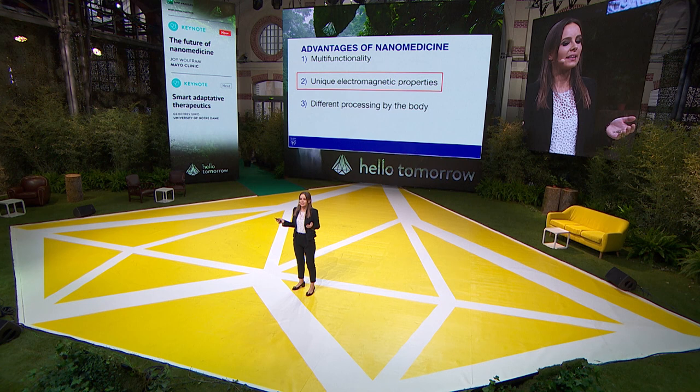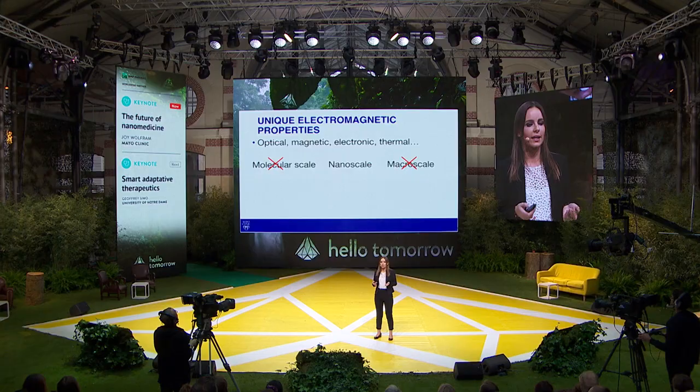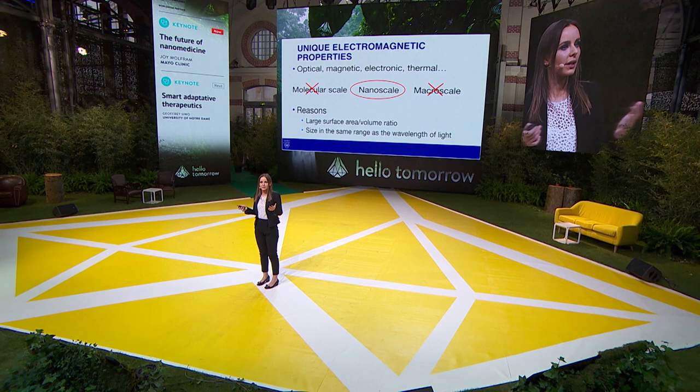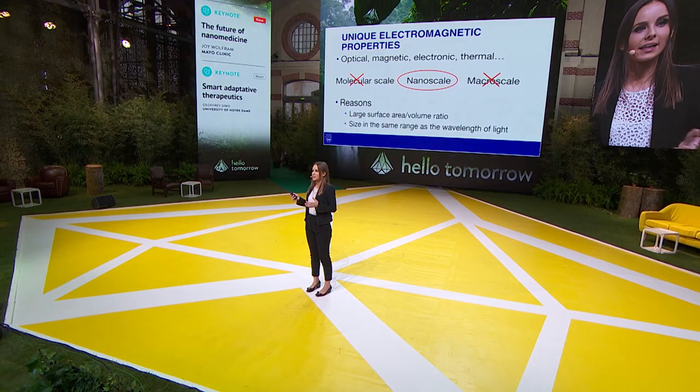The second advantage of nanomedicine involves unique electromagnetic properties — optical, magnetic, electronic, or thermal — that are not apparent on the molecular or macro scale, but only on the nanoscale. This is because nanoparticles have a large surface area-to-volume ratio and are in the same size range as the wavelength of light, causing them to display unique characteristics.